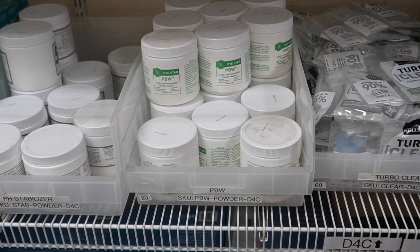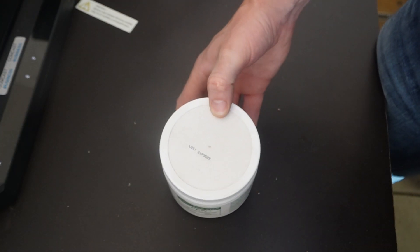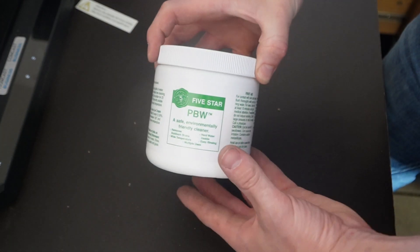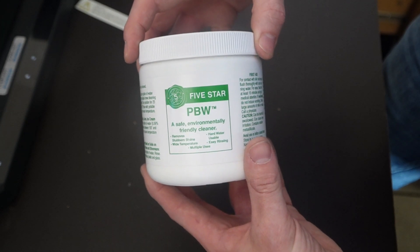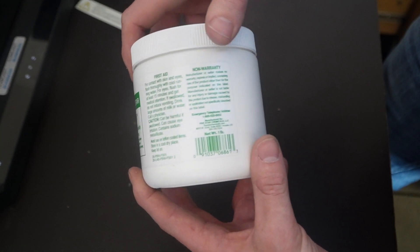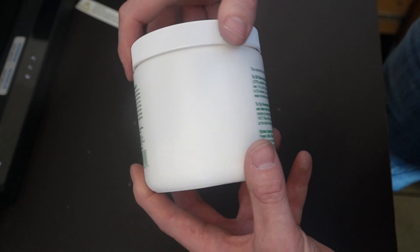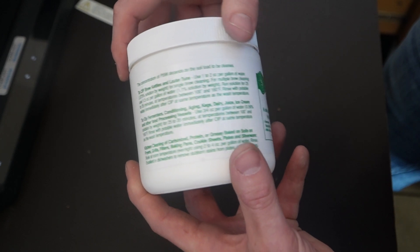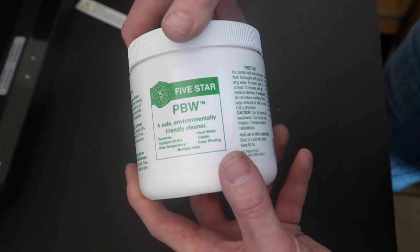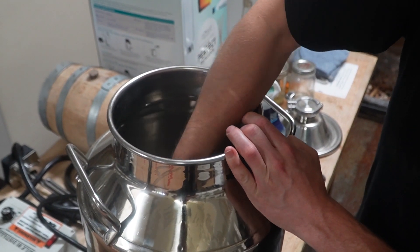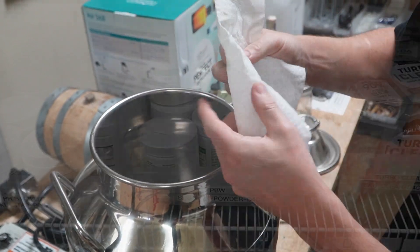PBW. This was patented by Coors Brewing. Shout out to Colorado breweries. PBW stands for powder brewery wash. It's an extremely effective cleaner, so it can work with hard or soft water and uses, as far as I know, sort of a secret blend of ingredients to be really fast acting, incredibly effective cleaner.